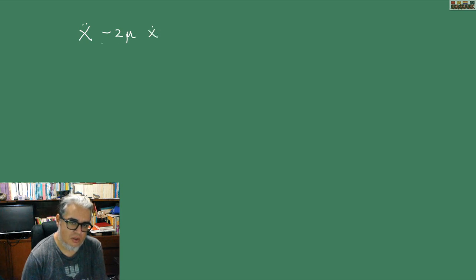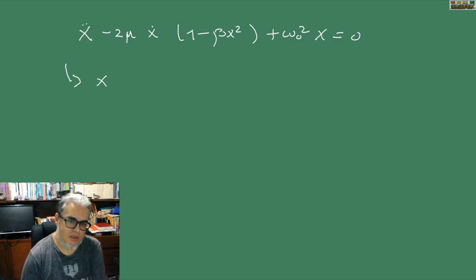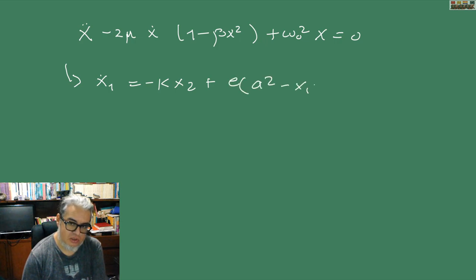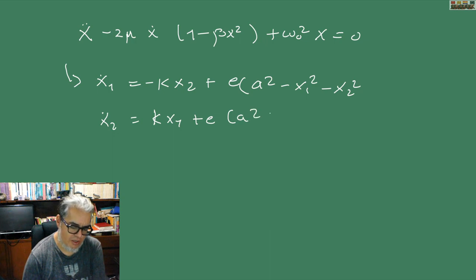This leads to something in the style of Van der Pol, and you write a system as follows: x1 dot equals minus k·x2 plus ε times (a² minus x1² minus x2²), and x2 dot equals the corresponding k with x1, plus ε times (a² minus x1 minus x2) both squared.